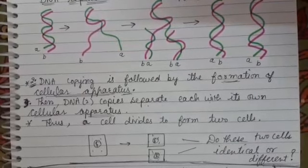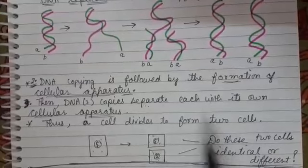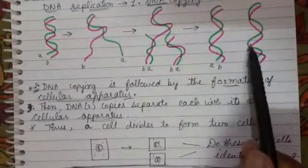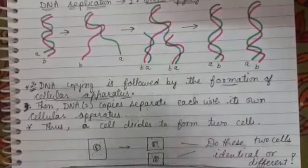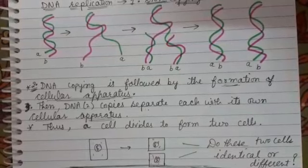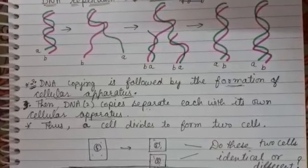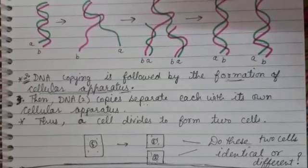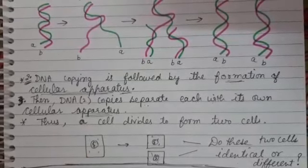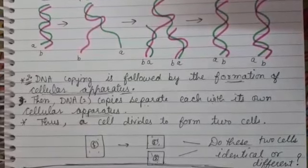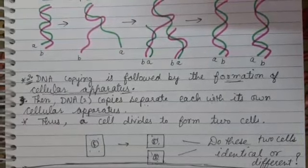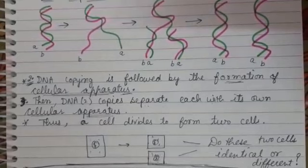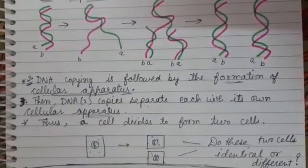Students, the answer to this question depends on the accuracy of the DNA copying process. DNA copying is a biochemical reaction, and we know no biochemical reaction is absolutely reliable. So we can expect the process of DNA copying will have some inaccuracies which may result in variations.